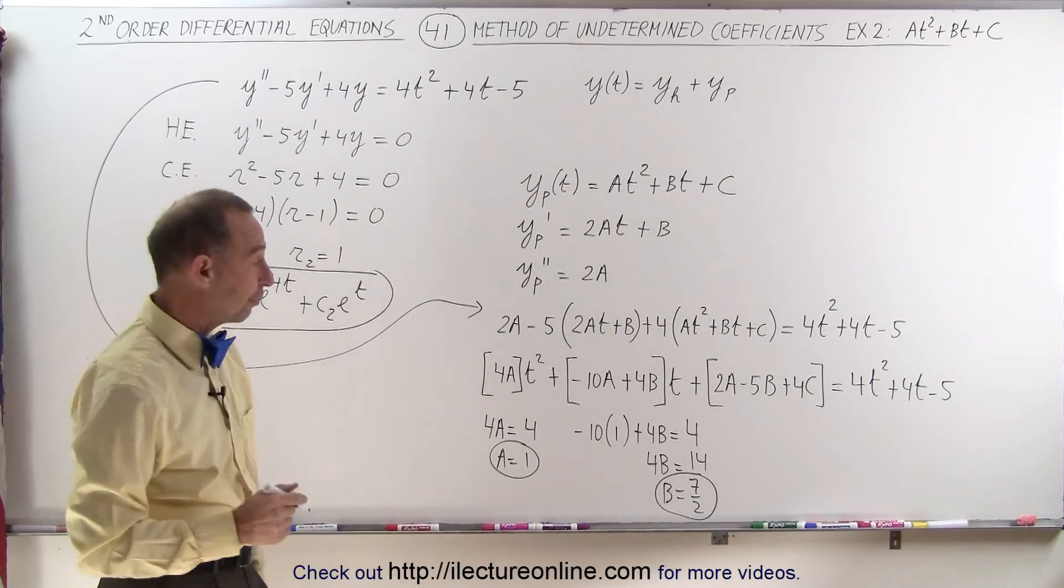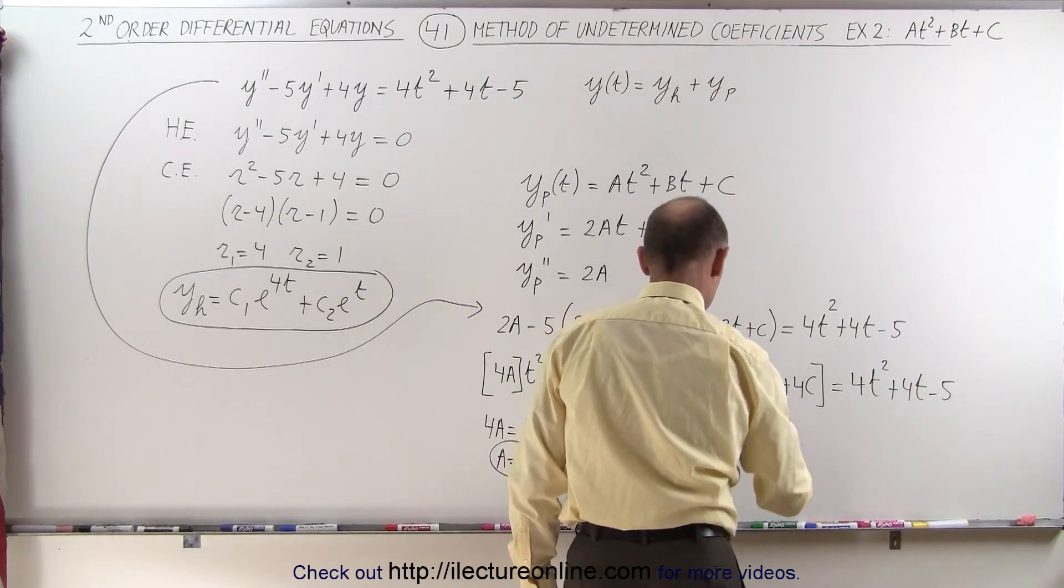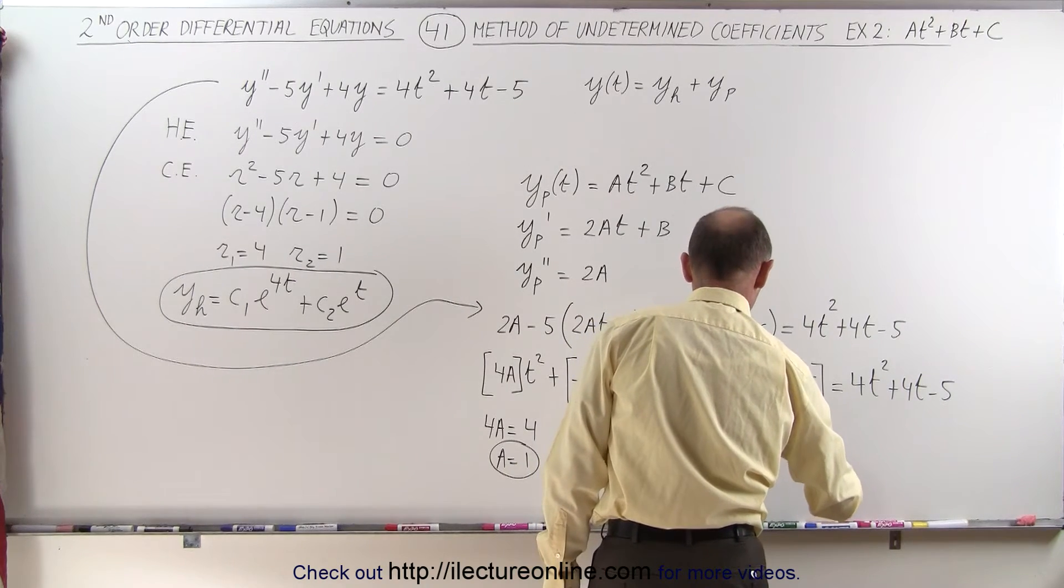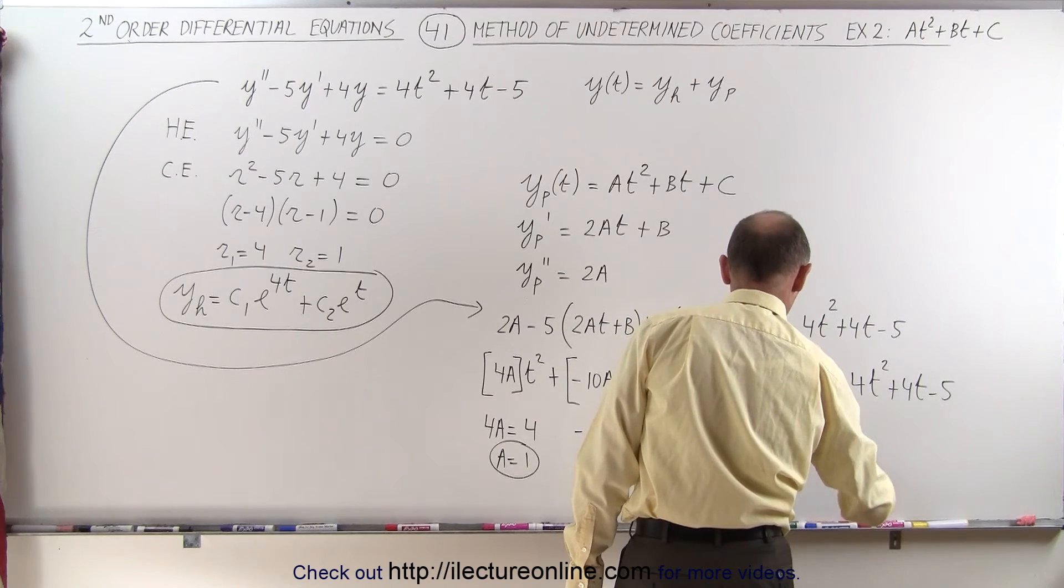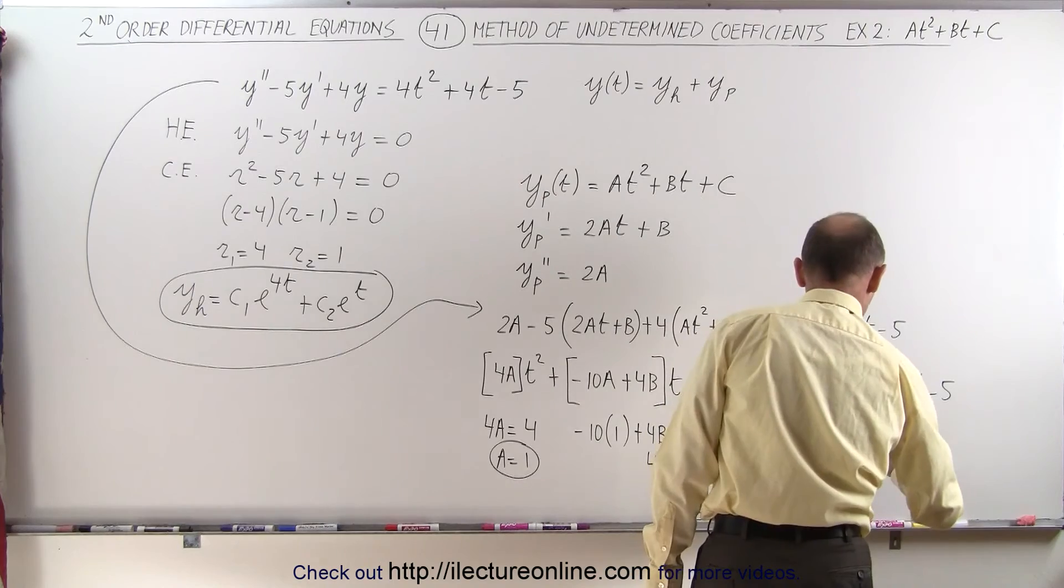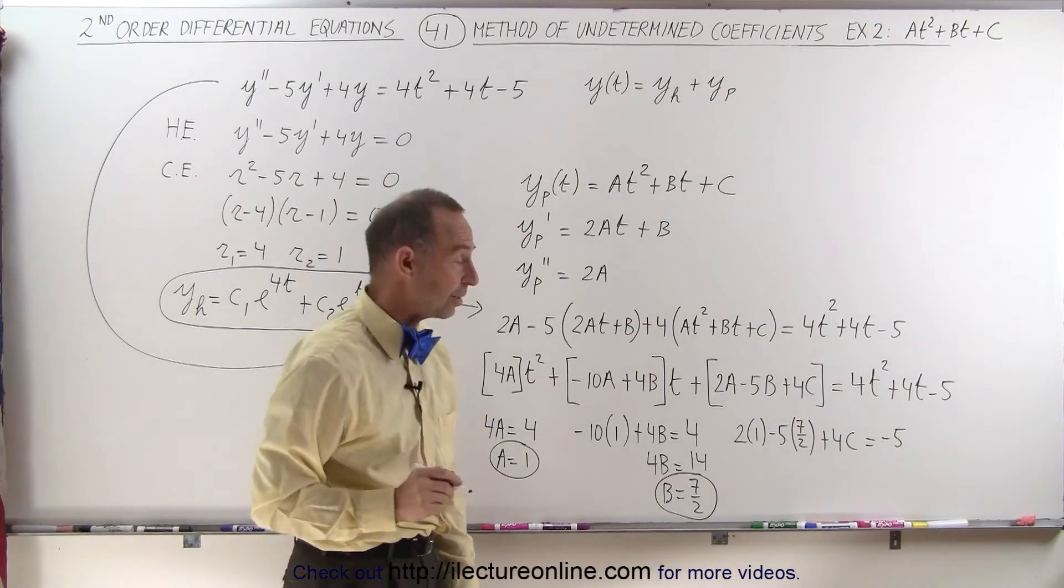And now we're looking for the third coefficient, c. So we can plug values for a and b in here. So we have 2 times 1 minus 5 times b, which is 7 over 2, plus 4 times c, and that has to equal negative 5. So that allows us to figure out what c is equal to.